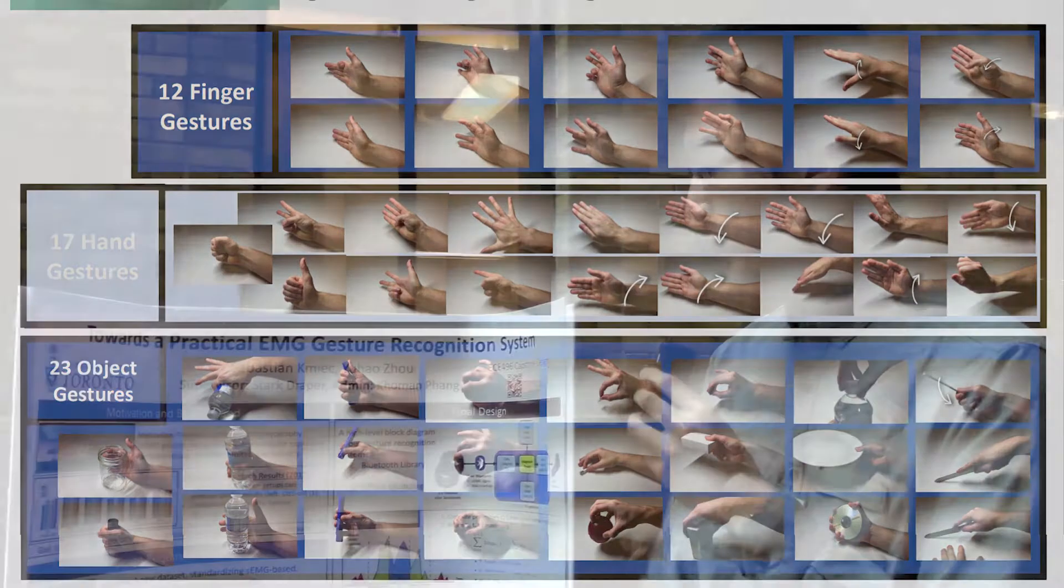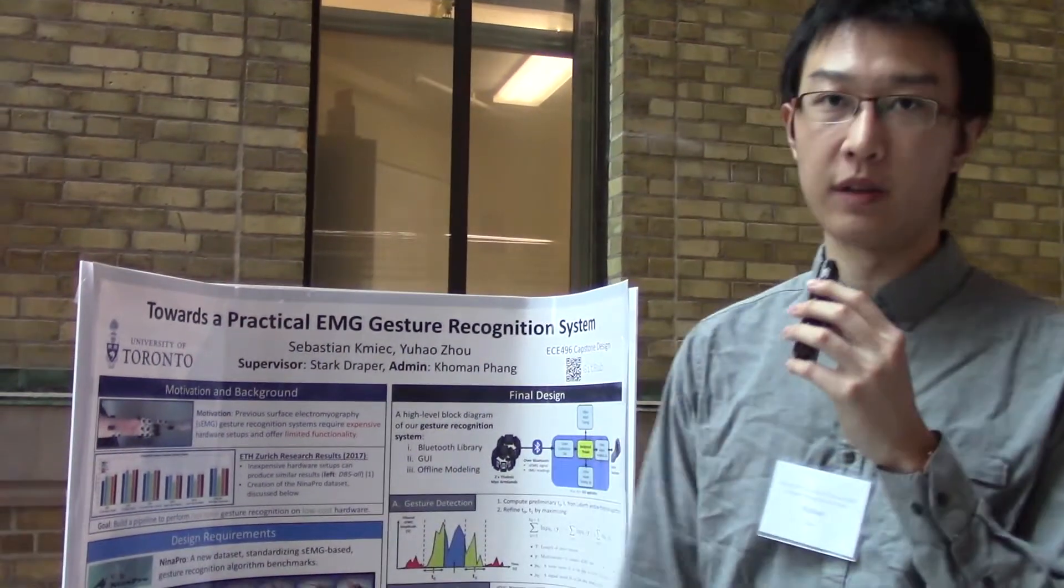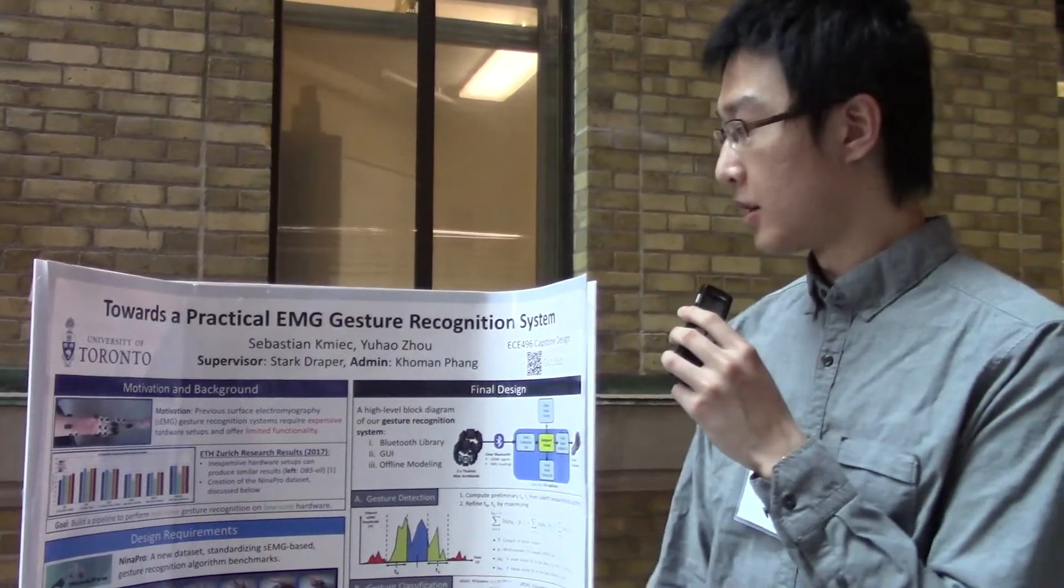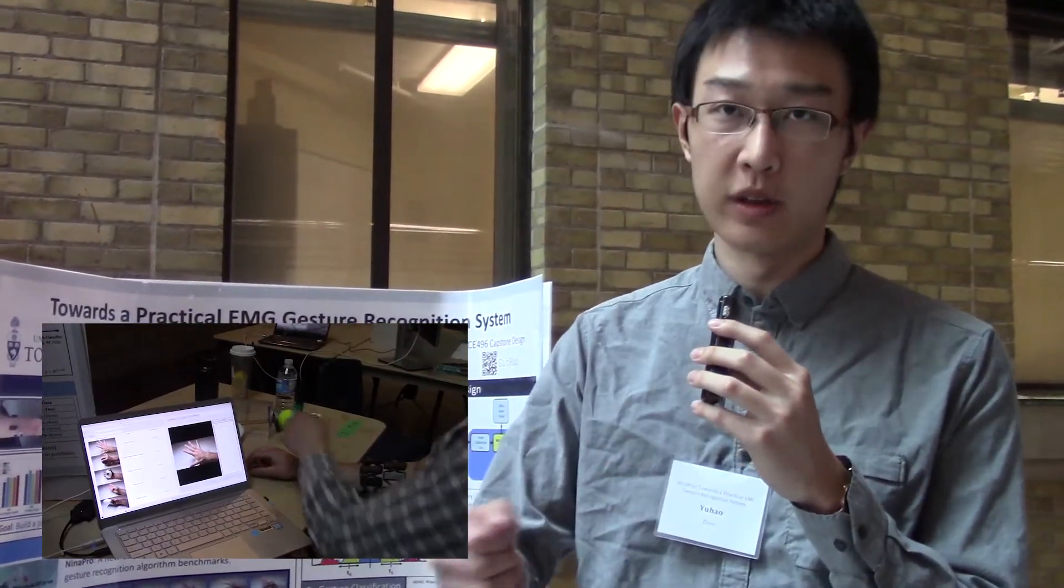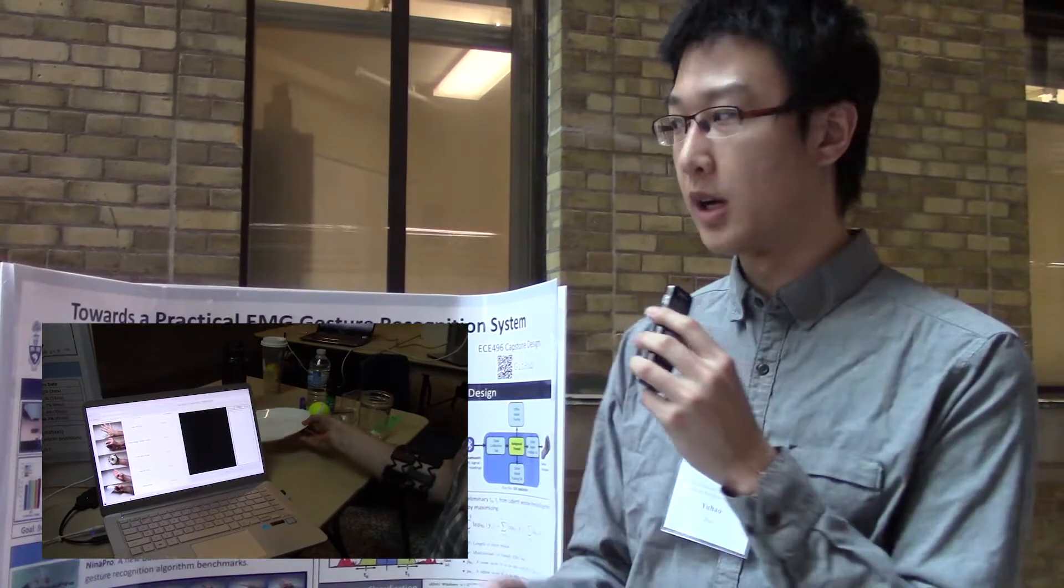These 52 classes can be roughly divided into three different groups. The first group involves simple finger movement, the second group involves movement with the wrist, and the third movement often requires interaction with an object.